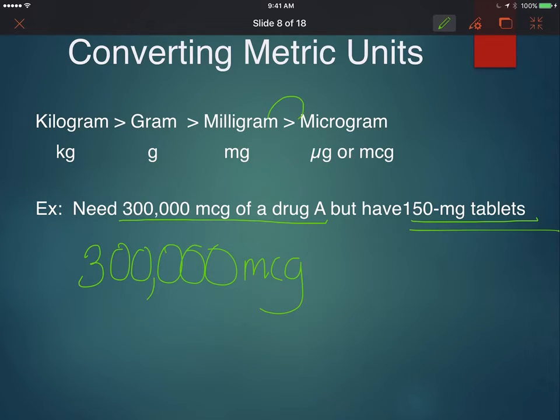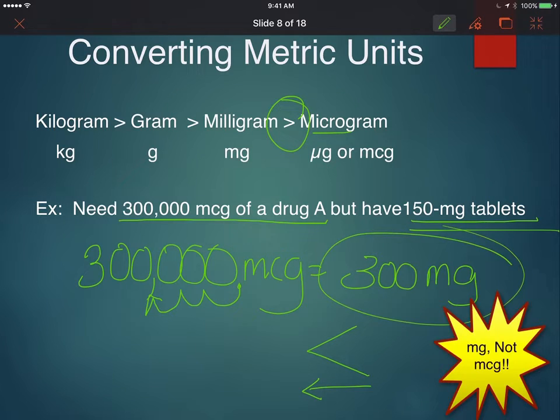We're going to use the arrow between micrograms and milligrams. Milligrams are greater than micrograms. So we're going to have our arrow this direction. In this case, we're going to move our decimal point three places to the left. One, two, three, and it's going to go right there. So our answer is 300 milligrams.